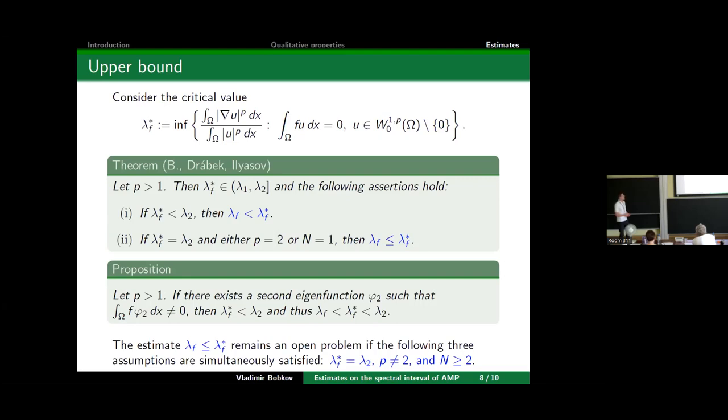If λ_f* equals λ₂, then we can provide the same inequality but only under the assumption p equals 2 or n equals 1. From these facts, the only remaining case which remains open—we don't know what the answer is—is whether the estimate holds true if these three assumptions are simultaneously satisfied: λ_f* equals λ₂, p is not 2, and the dimension is greater than or equal to 2. The difficulty here is that we don't have sufficient information on the eigenspace of the second eigenvalue of the p-Laplacian, even in the ball. In the paper we provide several sufficient assumptions which guarantee that this inequality is satisfied, to make the whole result meaningful.